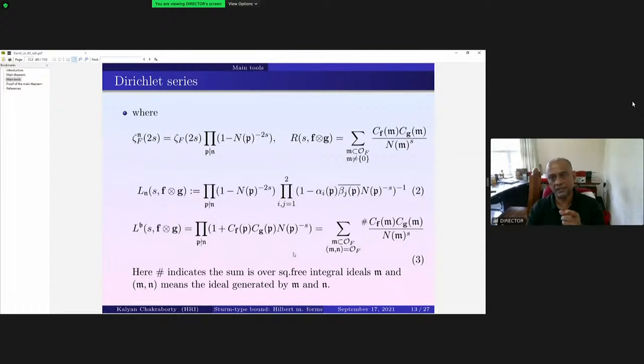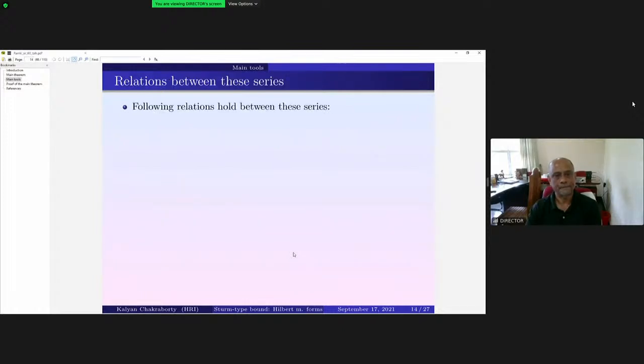So these are the two Dirichlet series that will be of our interest. Now there's this relation between these series. Firstly, L_n(s, f×g) is simply L(s, f×g) times f(s). And L_v(s, f×g), now this L_n(s, f×g) can be written in this form.